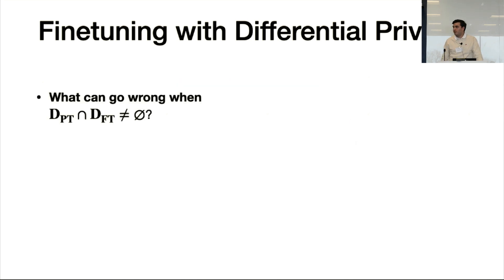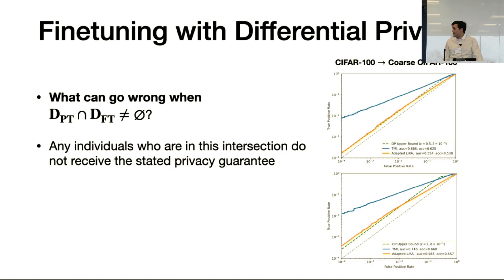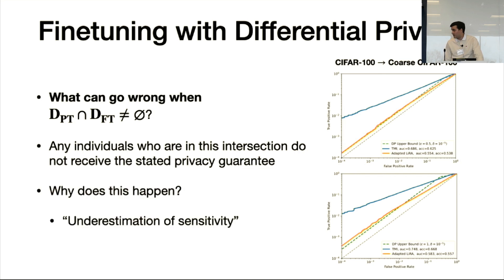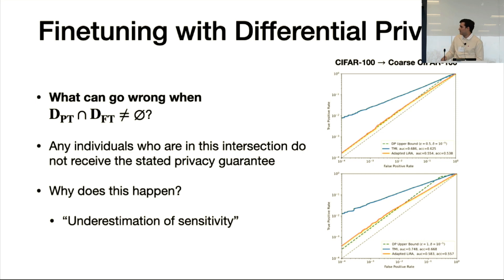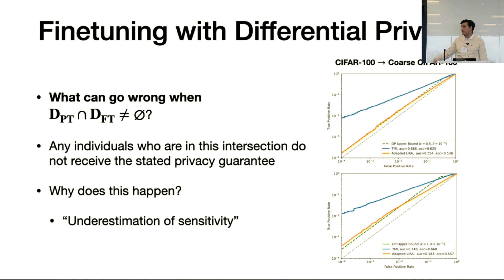When fine-tuning the final layer with differential privacy, but with no overlap between pre-training and fine-tuning datasets, the privacy guarantee only trivially applies to the fine-tuning data, and we get similar accuracy in determining membership of pre-training examples. The key result that motivated this paper is what happens when the pre-training and fine-tuning sets overlap. Any individuals in this overlap don't get any privacy guarantee, even if promised it during fine-tuning, due to underestimation of sensitivity — those gradients were not clipped or perturbed.